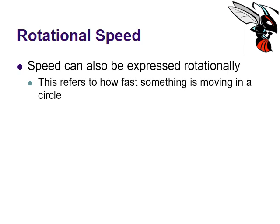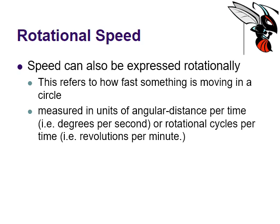Why is this important? Well, motors, for example, motors are measured. Their speed is measured through rotational speed. And this is also universally recognized. It is typically measured in things like angular distance per time. So for example, degrees per second or rotational cycles like revolutions per minute. That's probably more common.